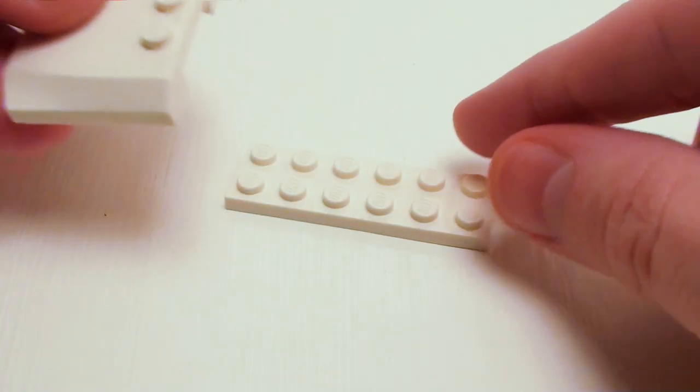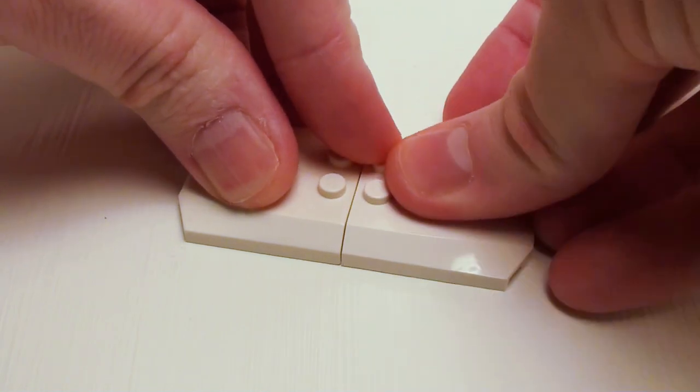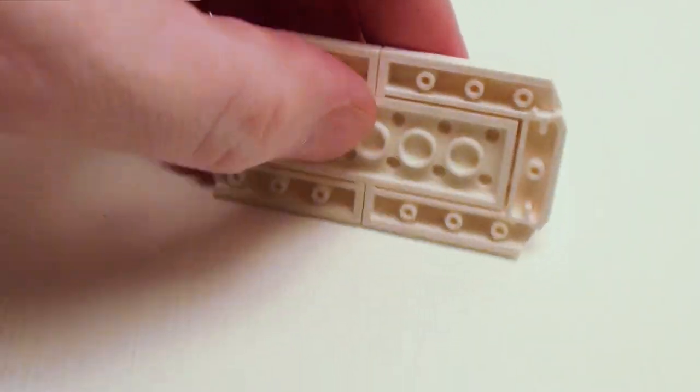For the top portion of the golf cart, start with a 2 by 6 plate. Let's set down a pair of 4 by 4 by 2 thirds plate hoods. Now let's flip this over.